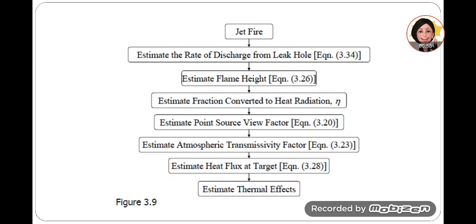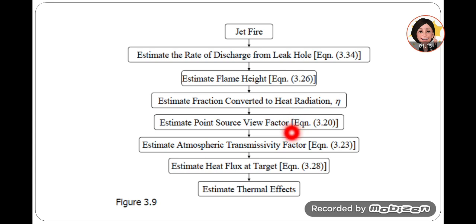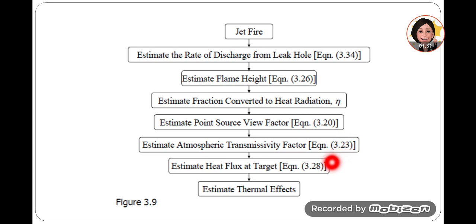For a jet fire, we first estimate the rate of discharge from the leak hole, then estimate the flame height, then identify the fraction converted to heat radiation, and then look for the point source view factor, atmospheric transmissivity, and finally heat flux to estimate the thermal effect. Heat radiation, point source view factor, atmospheric transmissivity, and heat flux were discussed in the pool fire lecture; for jet fire these are the additional two steps.